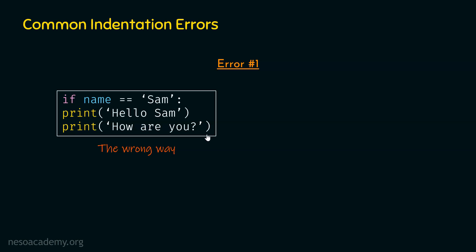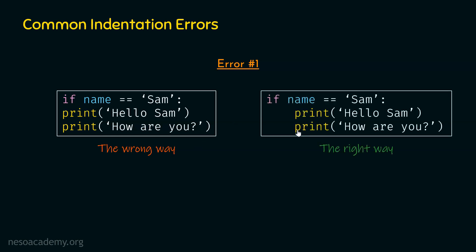One thing you should always remember is that after the if statement, there must be at least one statement which needs to be indented — then only it would be considered valid code. These two statements are not part of this if statement here, so this is not correct. The correct way is to indent these two statements to represent them as part of this if statement.